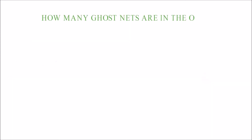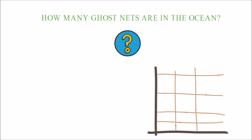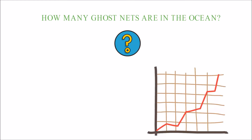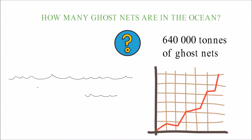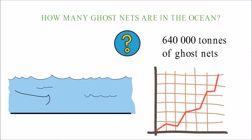How many ghost nets are in the ocean? The exact number is unknown, but the estimated number is growing each year. Experts say the ocean holds about 640,000 tons of ghost nets. Ghost nets are mostly found on the ocean floor, which makes them even more dangerous because most marine mammals get their food from the bottom of the ocean. International waters are the most affected, as they have a larger volume of boat traffic.